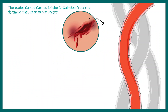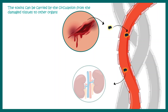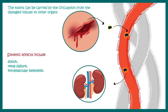The toxins can be carried in the circulation because the capillary walls are already damaged and become more permeable. Toxins can enter the bloodstream and ultimately travel to other organs such as the kidney, causing damage. Ultimately, this is involved in shock, renal failure, or intravascular hemolysis.